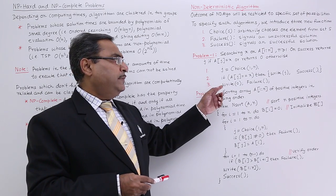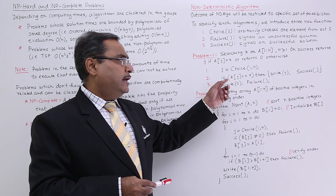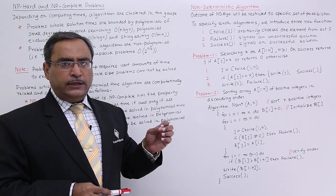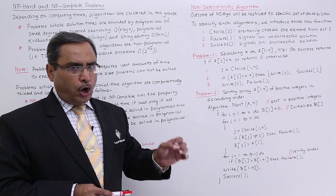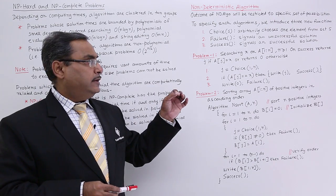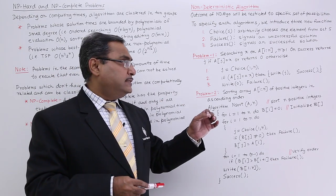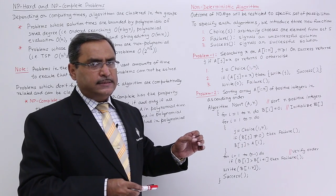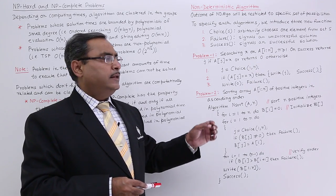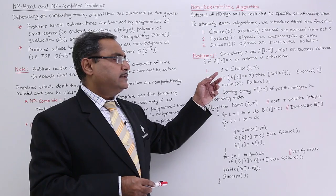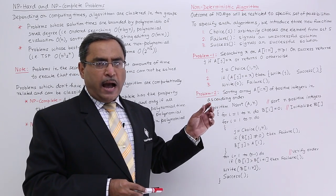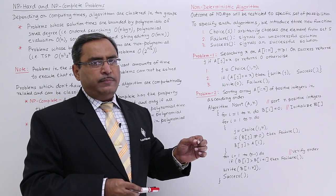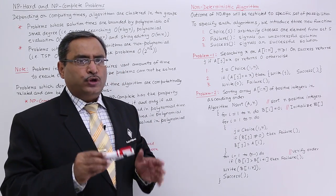If the item is present in the array, the outcome of this algorithm will be either success or failure — found or not found. So we are not restricting the outcome to a certain value, but restricting it to a set of possibilities.